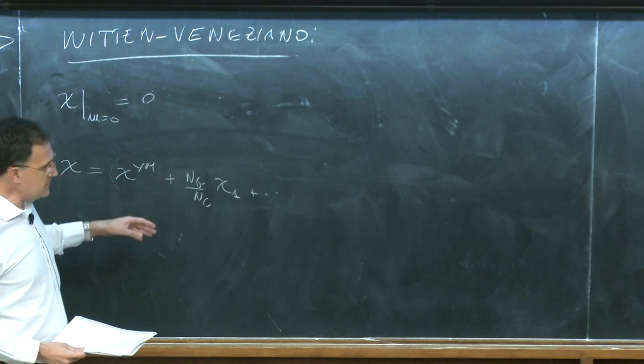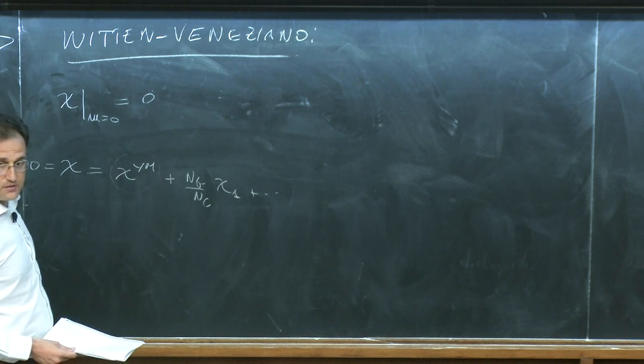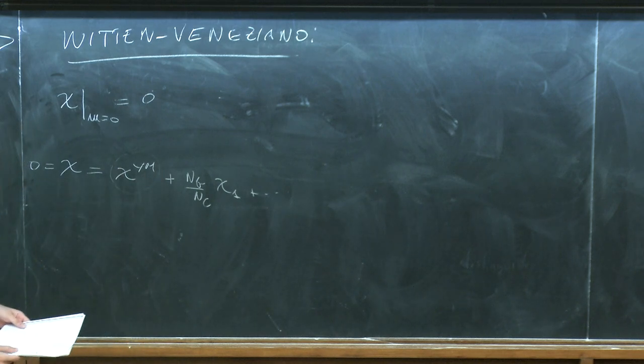This naive argument of expanding in large N_c must be wrong. By understanding why it's wrong, we can derive the Witten-Veneziano formula.